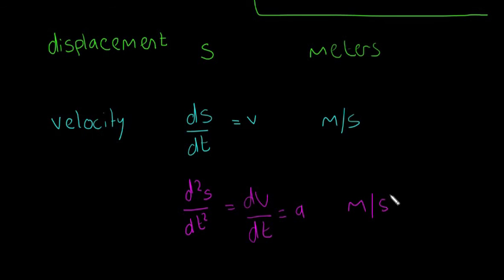A is in meters per second squared, and A is our acceleration. This might seem confusing at first, but it shows you the relationship between displacement, velocity, and acceleration.